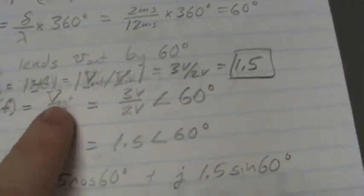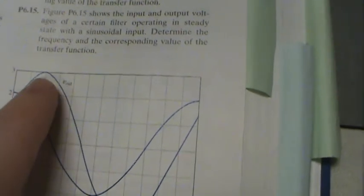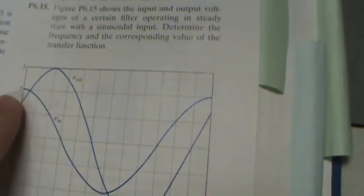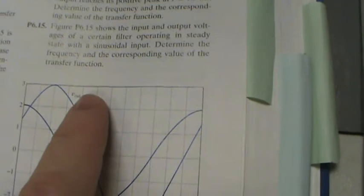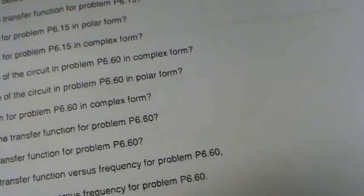Number 19 is asking for the magnitude of the transfer function between these two. You see that it's going to be 3 volts over 2 because the transfer function is V out over V in, just talking about magnitude. Notice the keyword in the problem for 19 is magnitude.